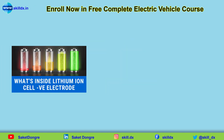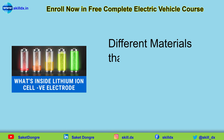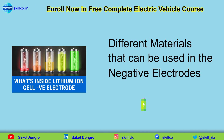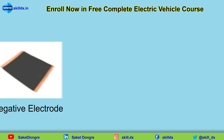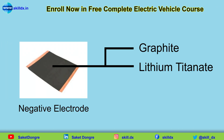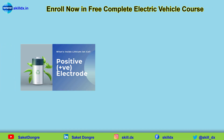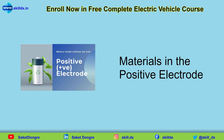In the last video I discussed different materials that can be used in the negative electrodes in lithium ion battery cells. We looked at graphite, lithium titanate, and silicon. In this video we are going to look at materials that could be used for positive electrodes instead, and it turns out that there are many more options from which we can choose.